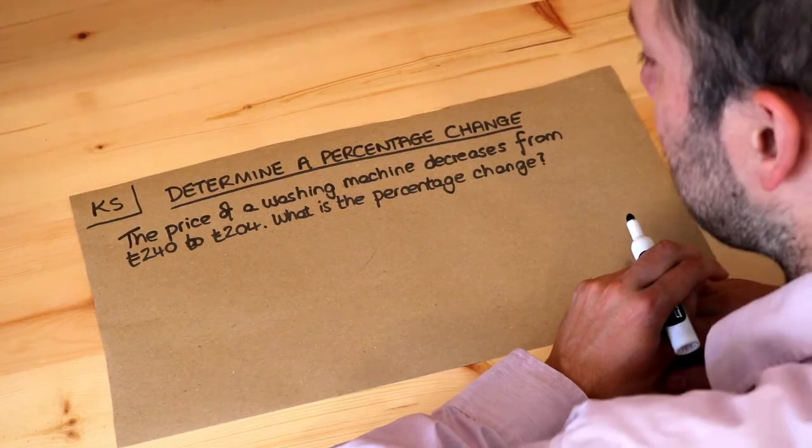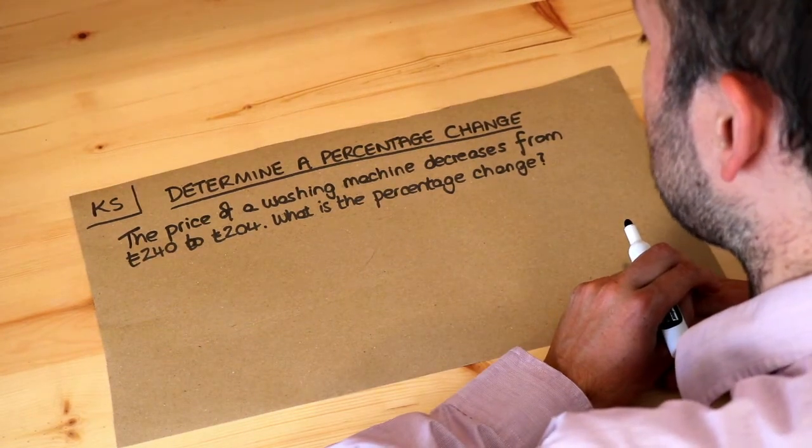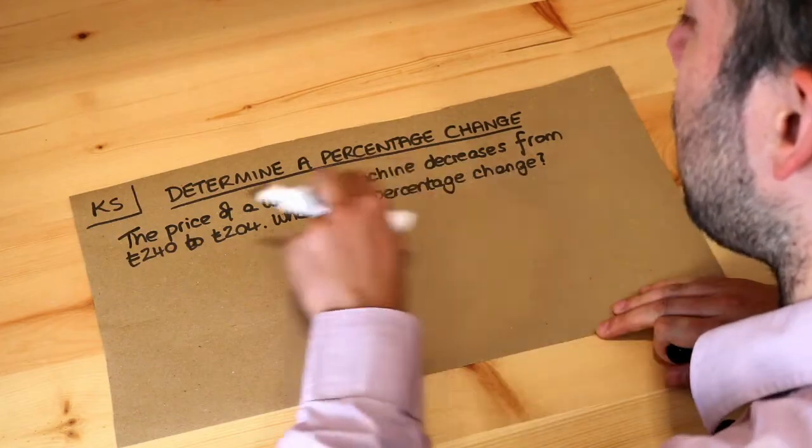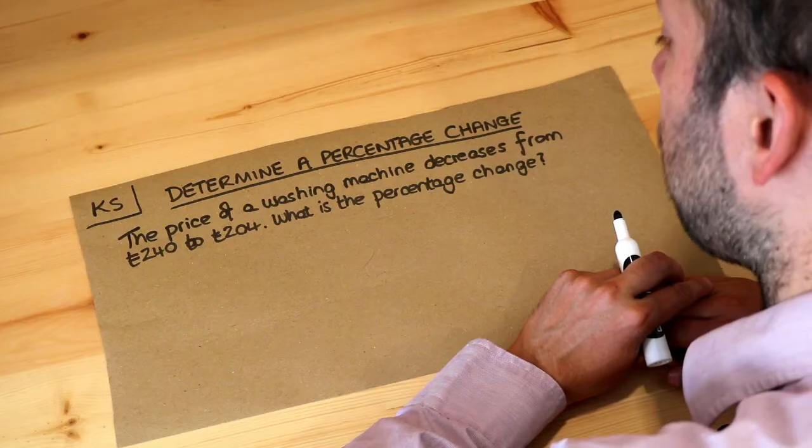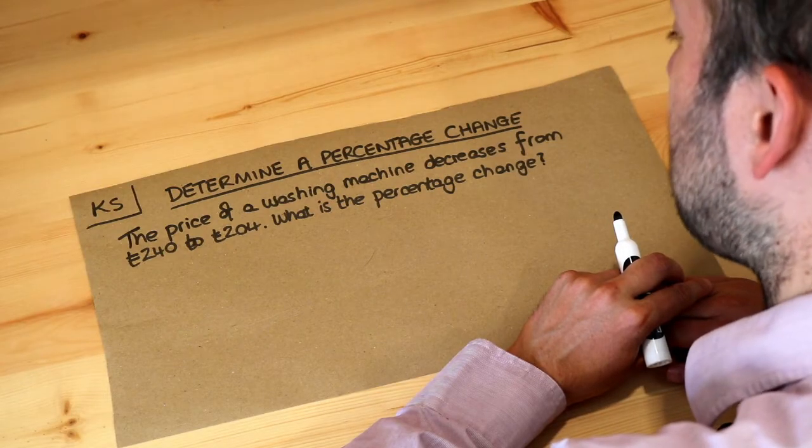Hello and welcome to this Dr Ross Math's key skill video on determining a percentage change. We've got this question here. The price of a washing machine decreases from £240 to £204. What is the percentage change?